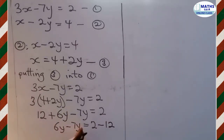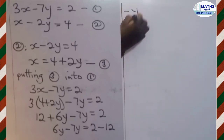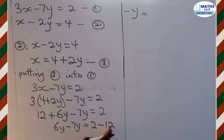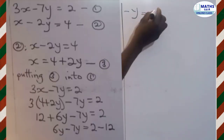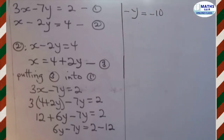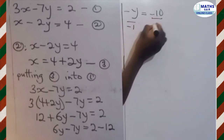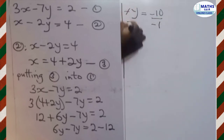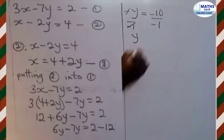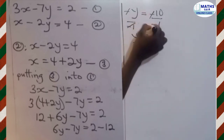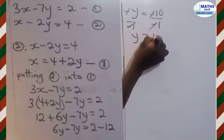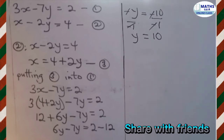6y minus 7y gives negative y, and 2 minus 12 gives negative 10. So negative y equals negative 10. We divide both sides by negative 1 to get positive y. Negative divided by negative gives positive, so y equals 10.